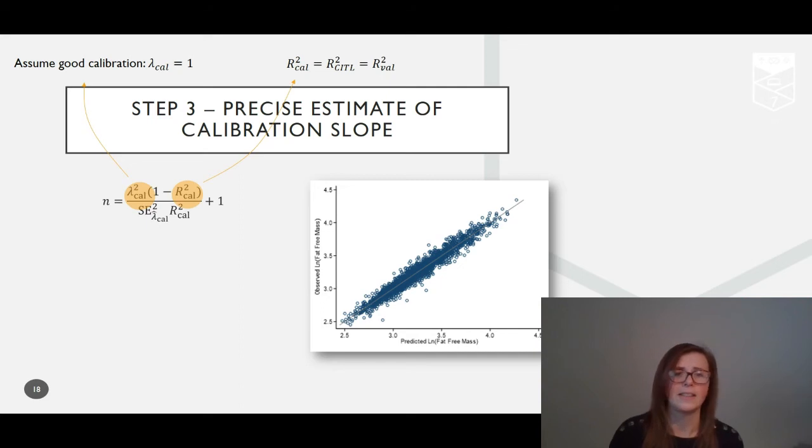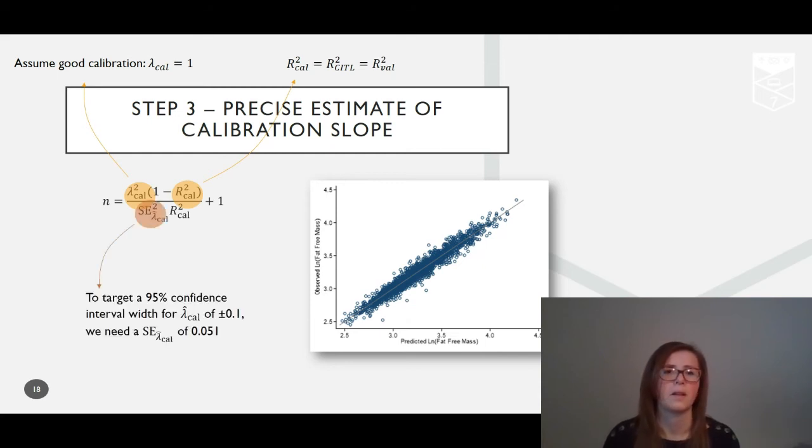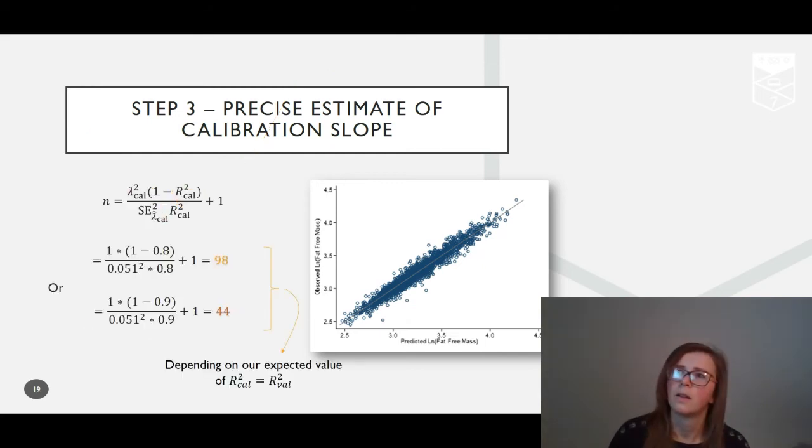Choosing a standard error for the C-slope of 0.051 then allows us to target a confidence interval with a width of at most 0.2. Plugging these values in gives us a requirement for only 98 children to externally validate our model to give that precision around the calibration slope, depending on what we'd expect R-squared cal to be.